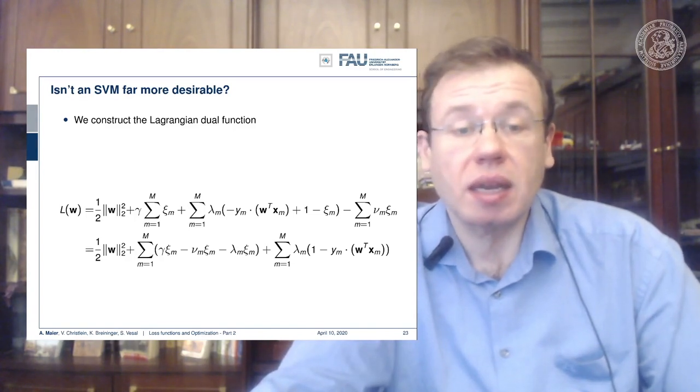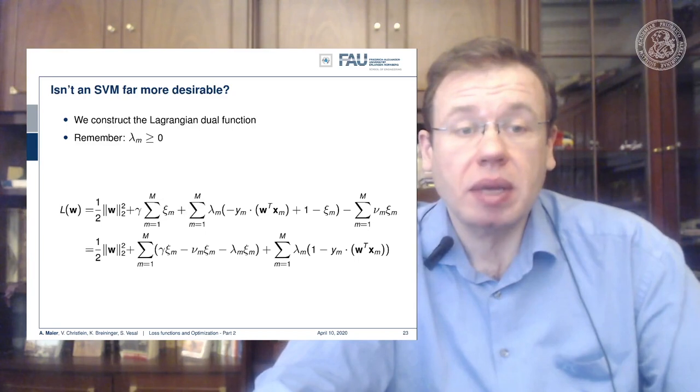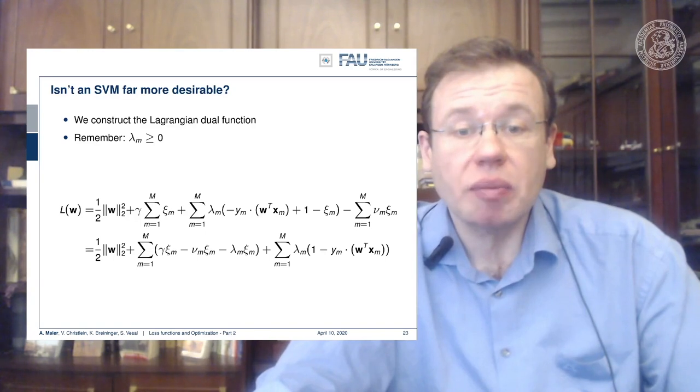And then we can go ahead, because we know all of the λm, they are larger or equal to 0. It means that everything that will be misclassified should be suppressed. And you can simply replace the λ term with the maximum function.